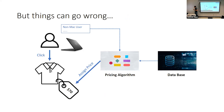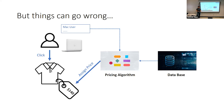This is good from the retailer's point of view because it helps maximize revenue. But sometimes things can go wrong. Imagine you are a non-Mac user and the algorithm charges you $70. Your friend is sitting next to you using a MacBook Pro, and the algorithm thinks MacBook Pro users are richer, so it charges them $140 for the exact same product.